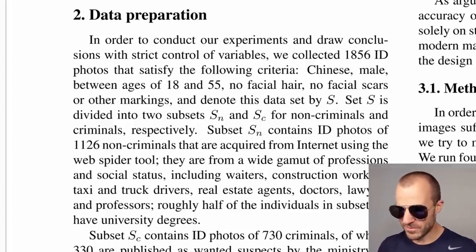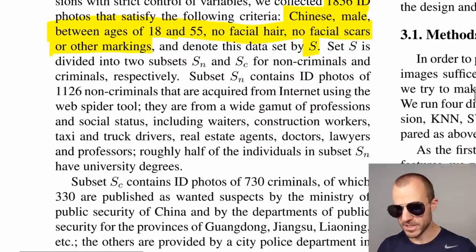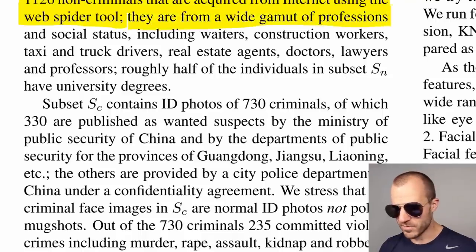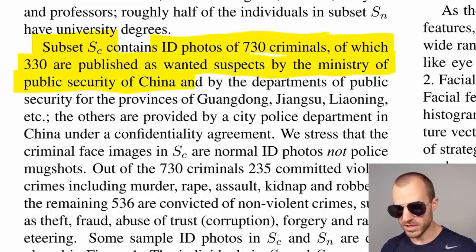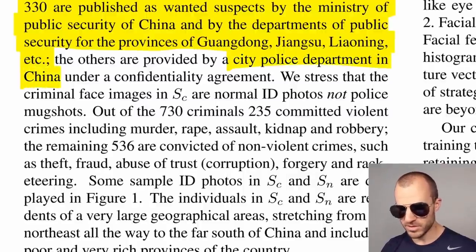They say in order to conduct their experiments, they have 1856 ID photos with the following criteria: Chinese male, between ages 18 and 55, no facial hair, no facial scars or other markings. The dataset is called S, with two subsets: SN for non-criminals and SC for criminals. The non-criminals subset contains 1126 ID photos acquired from the internet using a web spider tool, from a wide range of professions and social statuses including waiters, construction workers, and so on. The criminals subset contains 730 criminals, of which 330 are published as wanted suspects by the Ministry of Public Security of China and departments of public security for various provinces.